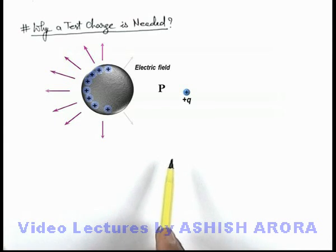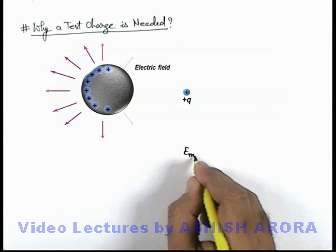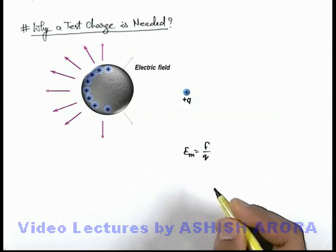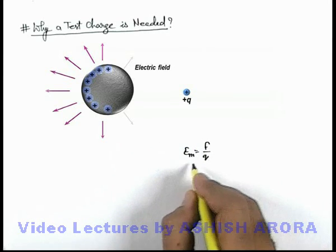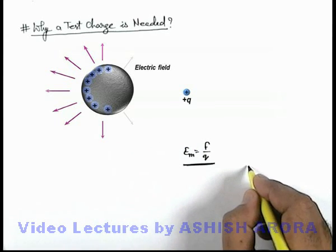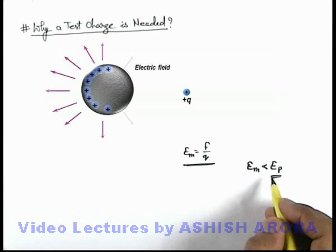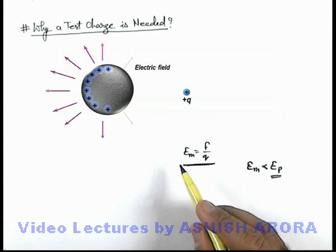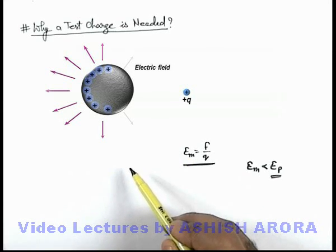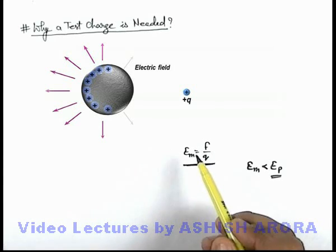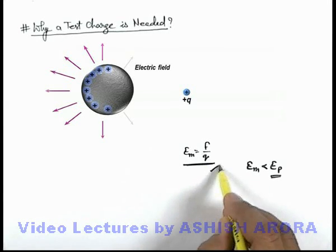Due to this redistribution, the electric field we intended to measure at point P will be decreased. If the force experienced by this charge q is F, then the measured electric field Em = F/q. The actual electric field we intended to measure was Ep, and we can state that the measured electric field Em is less than Ep. This is because the charge used for measurement produces induction effects via its own electric field onto the metal sphere, decreasing the electric field being measured. That is why a common charge cannot be used for measurement of electric field in this manner.